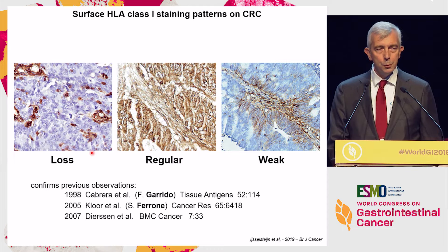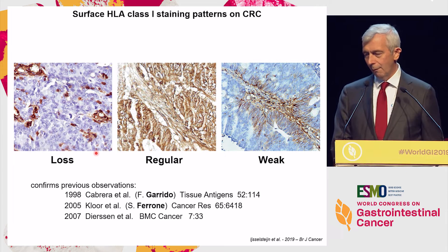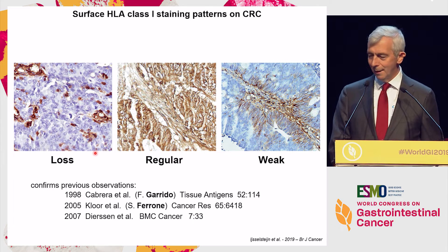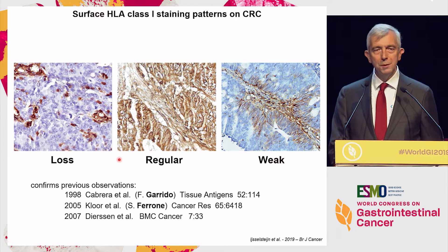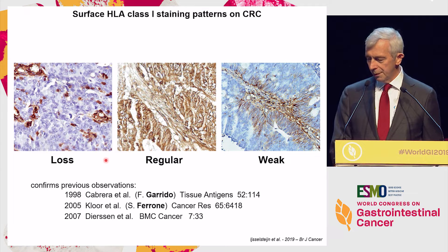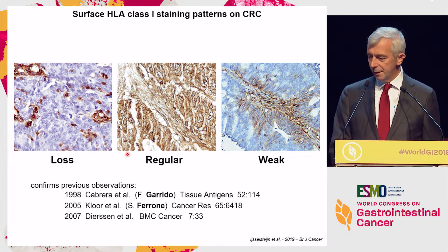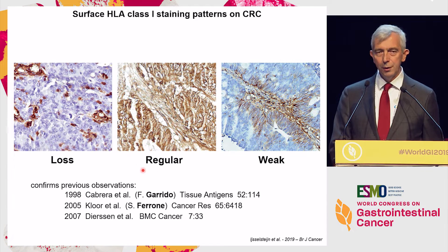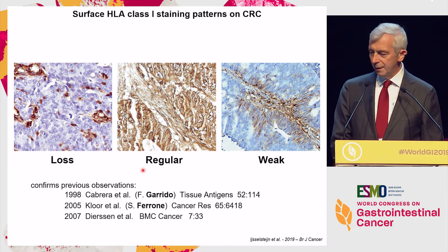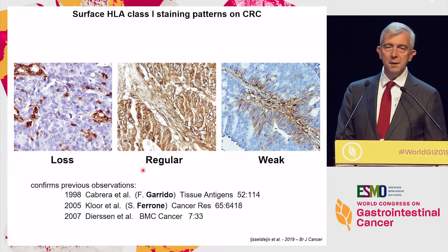A tumor that you know much better, probably: CRC. I took this picture from a recent paper from the group of Noel de Miranda. You see clearly here loss of HLA class I staining — the positive stromal cells are always a very important control in this analysis. Here, all the cells are positive and you see membranous staining. On the right, it's qualified as a weak staining.